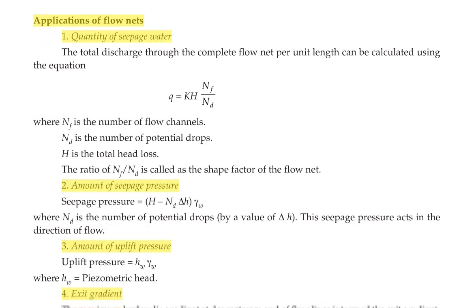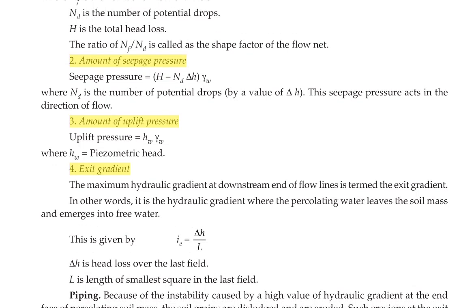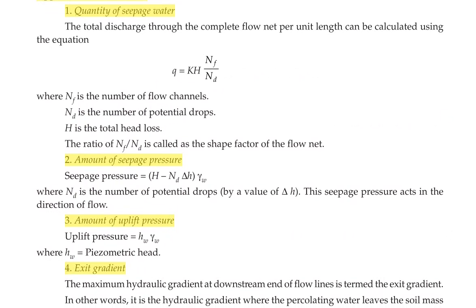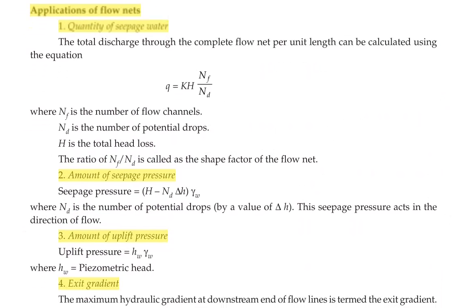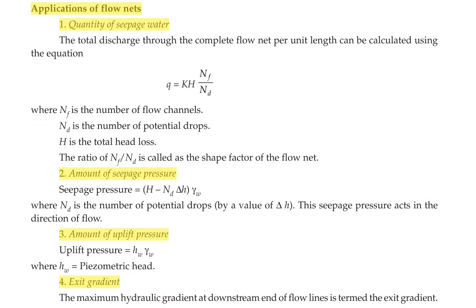Next we are going to see the applications of flow net. There are four applications: number one, quantity of seepage water; number two, amount of seepage pressure; number three, amount of uplift pressure; number four, exit gradient. The quantity of seepage water is the total discharge through the complete flow net per unit length, calculated by Q = KH × (NF / ND), where NF is the number of flow channels, ND is the number of potential drops, and H is the total head loss. The ratio NF/ND is also called the shape factor of the flow net.